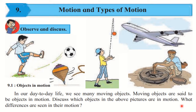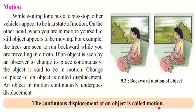Every motion is different; all motions are not of the same type. Today we will discuss the types of motion. First, let us understand the meaning of the word motion, and for that we need to understand displacement. Displacement is similar to distance, but the difference is that in distance we don't mention direction, whereas for displacement direction is very important. Both represent distance covered, but displacement always includes direction.